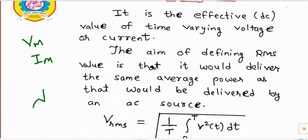Suppose if I have one AC source and if I have one DC source. Since RMS value is the effective value or DC equivalent value, this will deliver the same average power as that would be delivered by an AC source. So this RMS value will deliver the same average power as that would be delivered by an AC source.